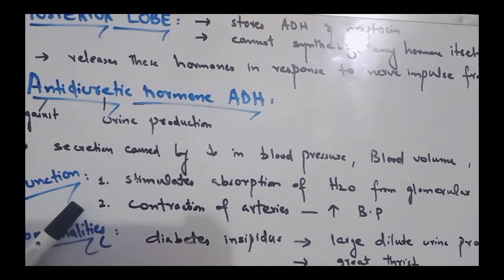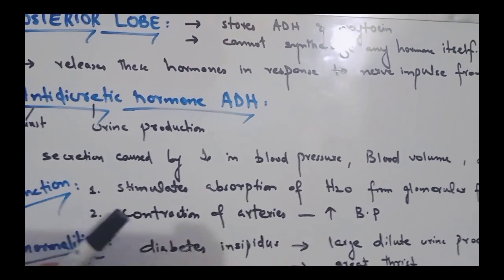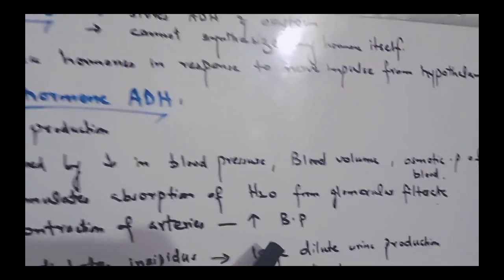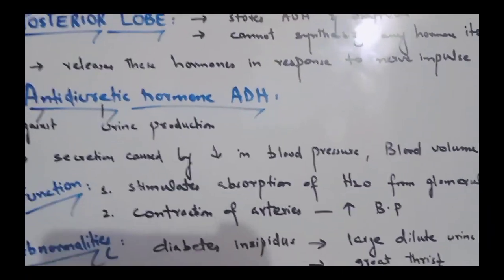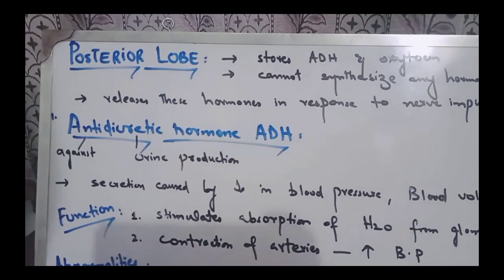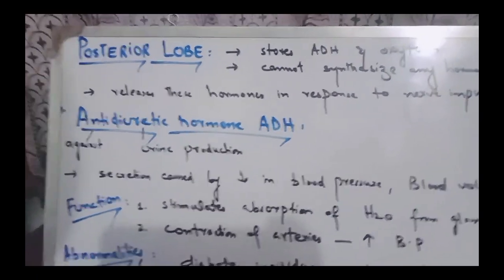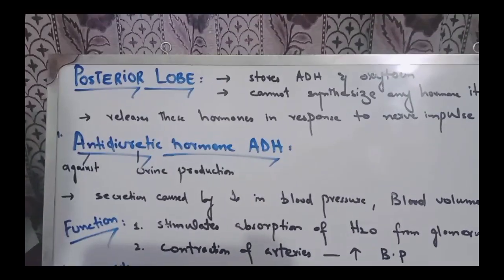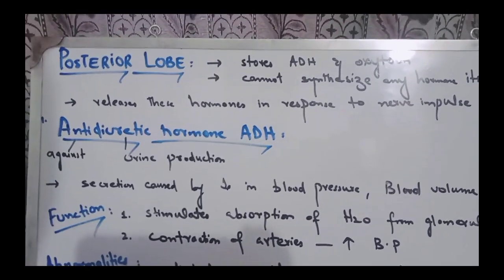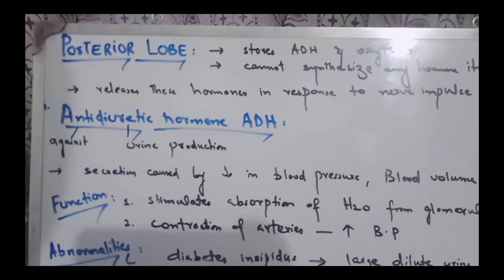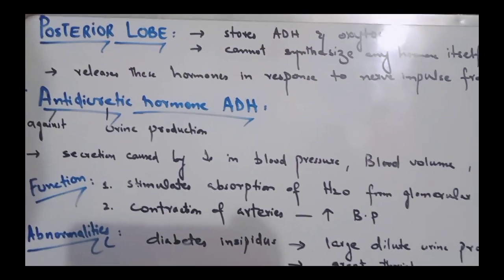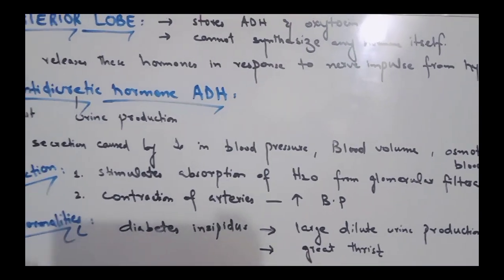The second function of ADH is the contraction of arteries, which results in high blood pressure. If blood pressure is low, the ADH hormone is secreted, causing contraction of arteries, due to which blood pressure automatically increases.